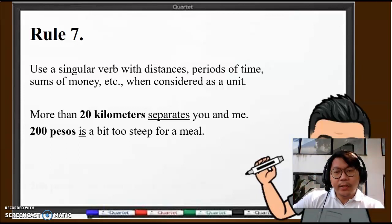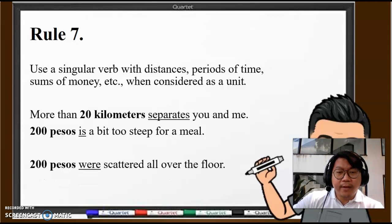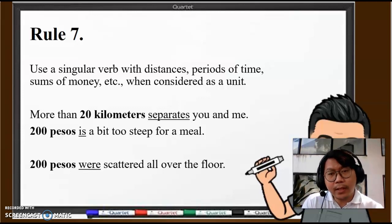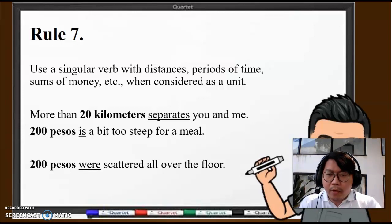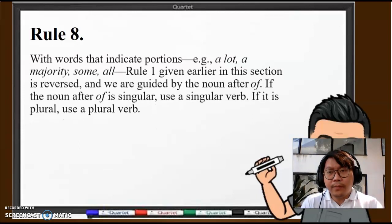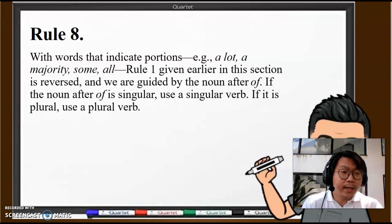But when is it not considered as a single unit? Well, have a look at the third example here: "200 pesos were scattered all over the floor." The money is all over the floor. In this particular case, the money is no longer considered as a single unit because the money is scattered. Therefore we have to use "were scattered all over the floor."